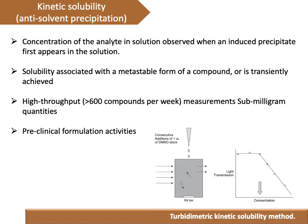In this method, instead of solid compound, a stock solution of the compound — whose solubility is to be determined — is prepared in DMSO. That solution is added to the aqueous phase and solubility is measured either by measuring the precipitate or by determining the point where the precipitate disappears. Three methods are used; the first is the turbidimetric kinetic solubility method.